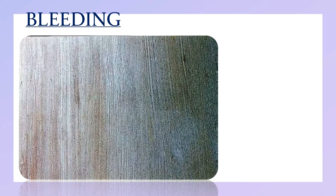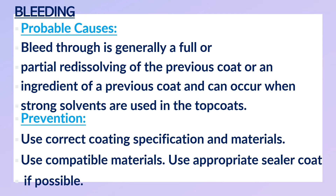Bleeding represents the staining of a paint film by diffusion of a soluble colored substance from the underlying paint, giving undesirable discoloration or staining. Often seen where bituminous or tar-based products are overcoated with a top coat in which the tar or bituminous bleeds through; also occurs in emulsion paint. Probable causes: bleed-through is generally a full or partial re-dissolving of a previous coat or ingredients of a previous coat, and can occur when strong solvents are used in the top coat. Prevention: use correct coating specification and materials, use compatible materials, and use an appropriate sealer coat if possible.